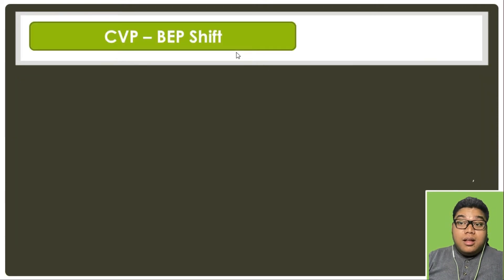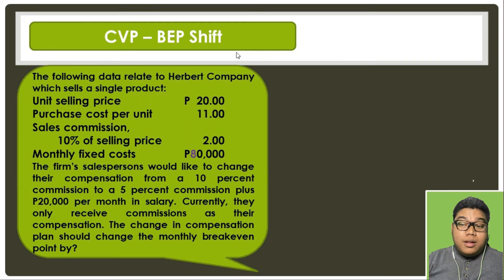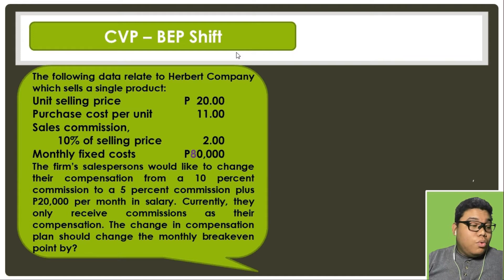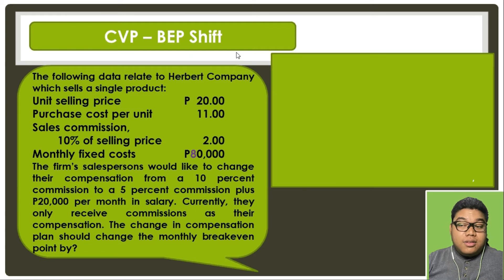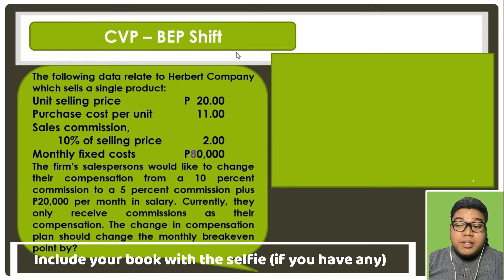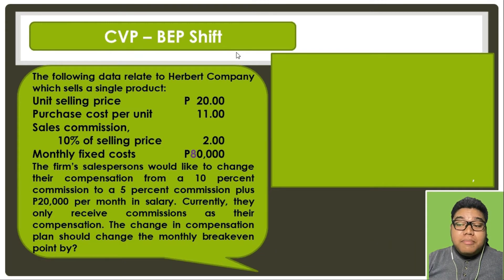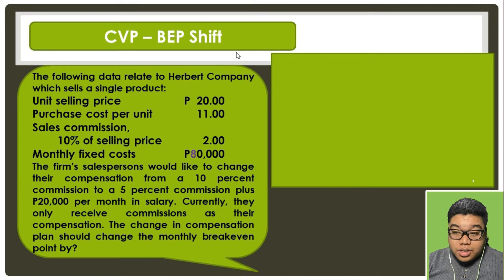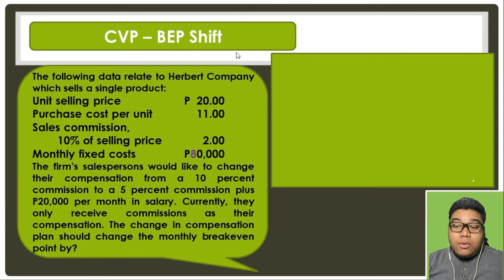Now let's proceed to a problem wherein the break-even point will shift. The following data relates to Herbert Company, which sells a single product. The selling price is given, purchase cost per unit, sales commission which is 10% of selling price, and monthly fixed cost of 80,000. The firm's salesperson would like to change their compensation from a 10% commission to a 5% commission plus 20,000 per month in salary. Currently they only receive commission as their compensation. The change in compensation plan should change the monthly break-even point by how much?